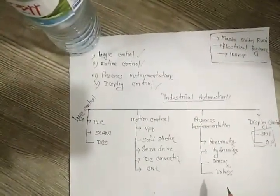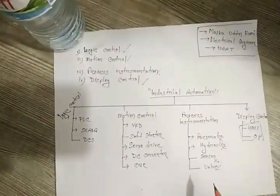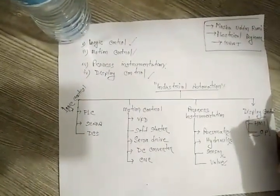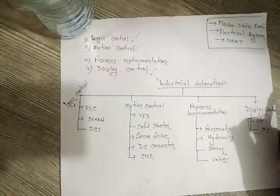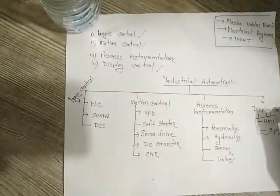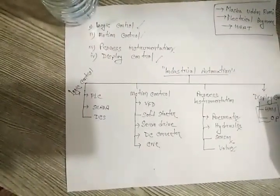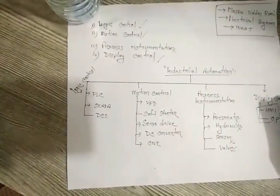Hello everyone, this is Mejba Odin Rumi and today I am going to discuss a brief description about industrial automation. Industrial automation is divided into four parts.